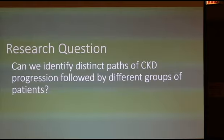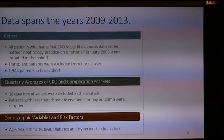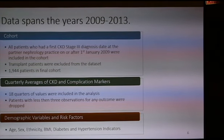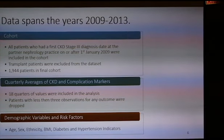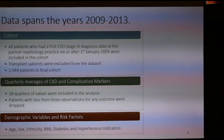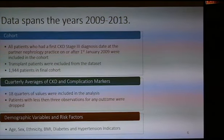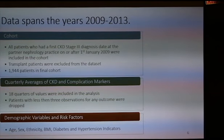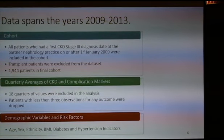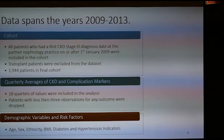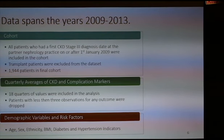Our dataset spans the years 2009 to 2013, and after pre-processing and cleaning, we end up with a cohort of almost 2,000 patients. For these patients we have demographic variables such as age and gender, as well as 18 quarterly biomarker values covering biomarkers significant for the progression of chronic kidney disease and major complications — for example, hemoglobin for anemia.